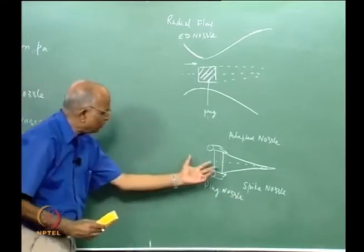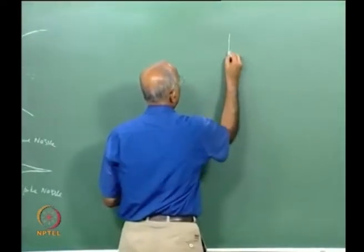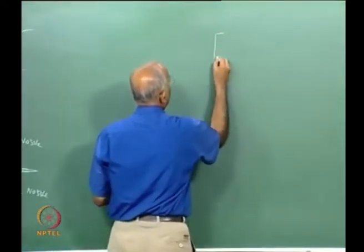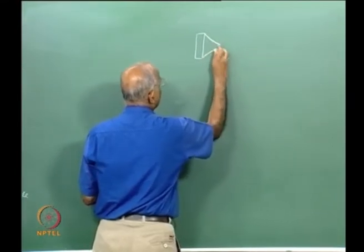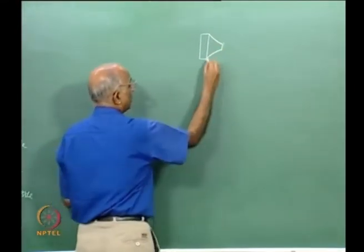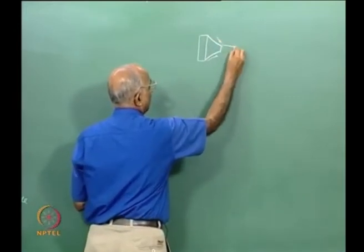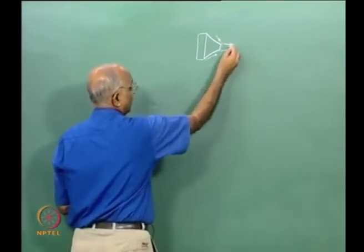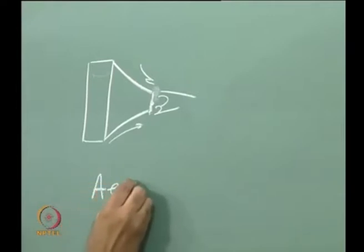I could still have a variation where this particular plug at the centre is terminated a little earlier — I do not allow the full spike length. In other words, I have primary flow along the spike, shock waves here, secondary flow, and recirculation of base pressure at the truncated end. This becomes what we call the aerospike nozzle.